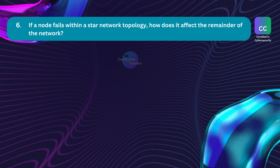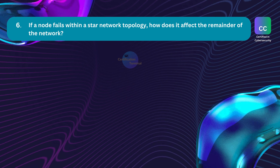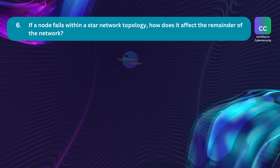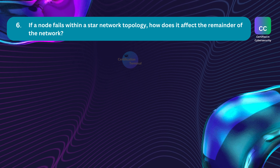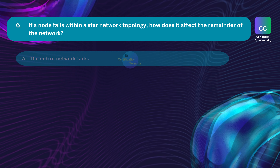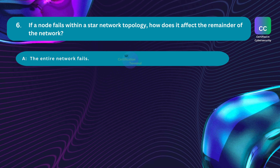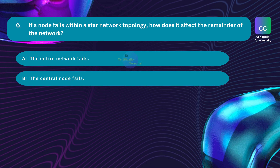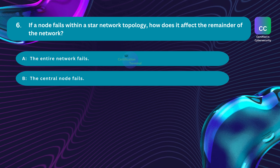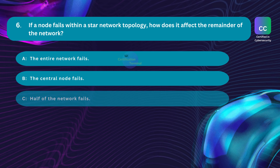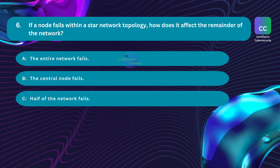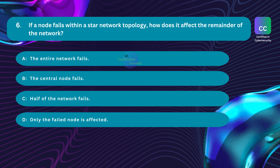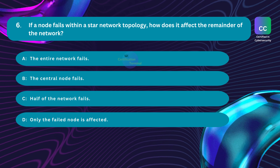Question number 6. If a node fails within a star network topology, how does it affect the remainder of the network? Option A: the entire network fails. Option B: the central node fails. Option C: half of the network fails. Option D: only the failed node is affected.